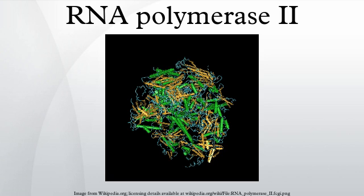RPB2 is the second largest subunit. In combination with at least two other polymerase subunits, it forms a structure within the polymerase that maintains contact in the active site of the enzyme between the DNA template and the newly synthesized RNA.